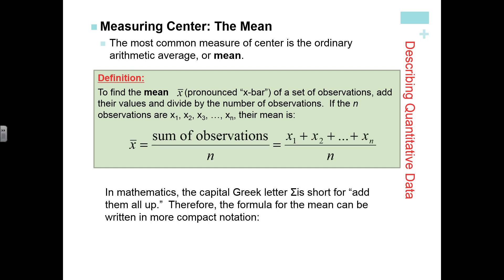The basic formula for mean is the sum of the observations over n, where n is the number of observations. Or you could list it out as x₁, x₂ — the first observation, the second observation — all the way to the nth observation, divided by the total number of observations n.